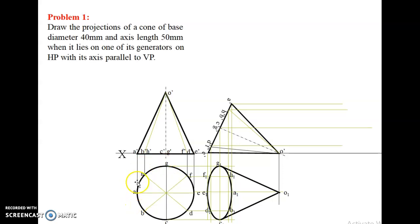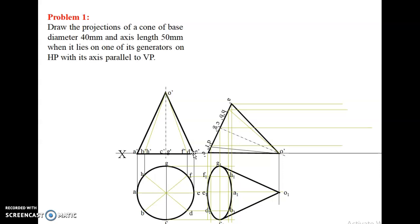Now project lines — draw straight projection lines up from the circle. From A, draw a straight projection line. From H, draw a straight line up to the reference line, which corresponds to B and H. From G, draw a straight line corresponding to C and G. From F, draw a straight line corresponding to D and F. From E, draw a straight line corresponding to E.